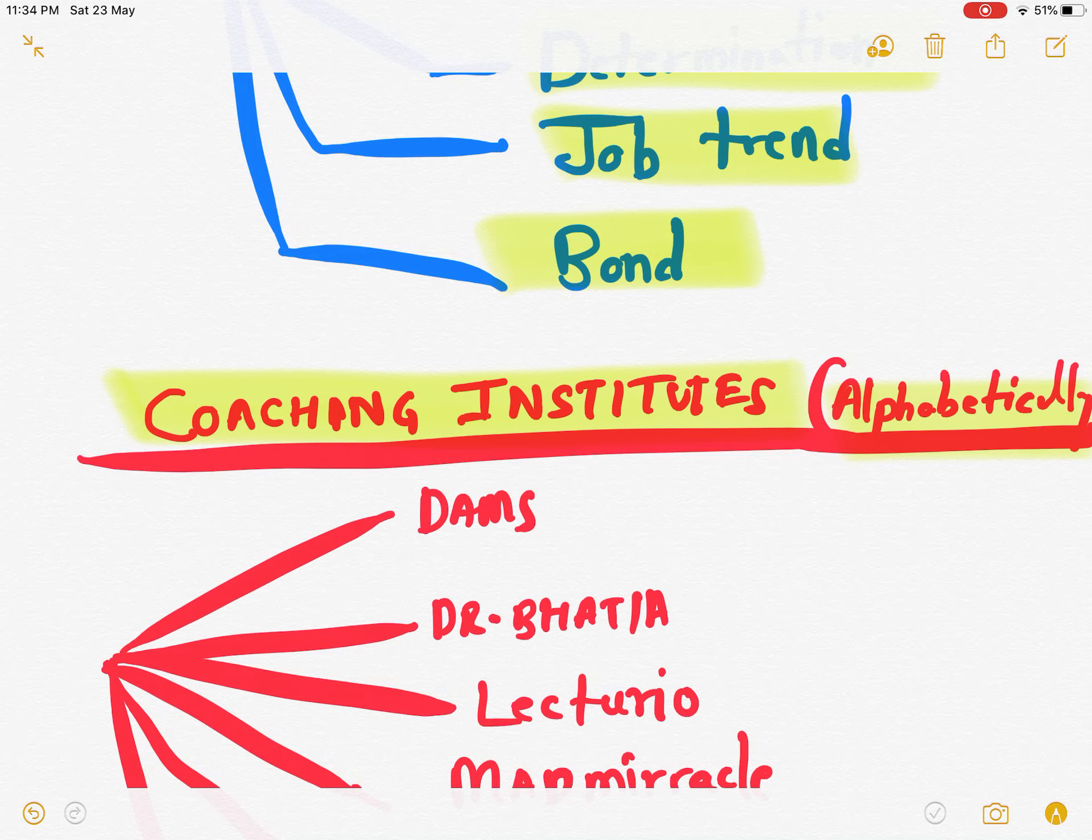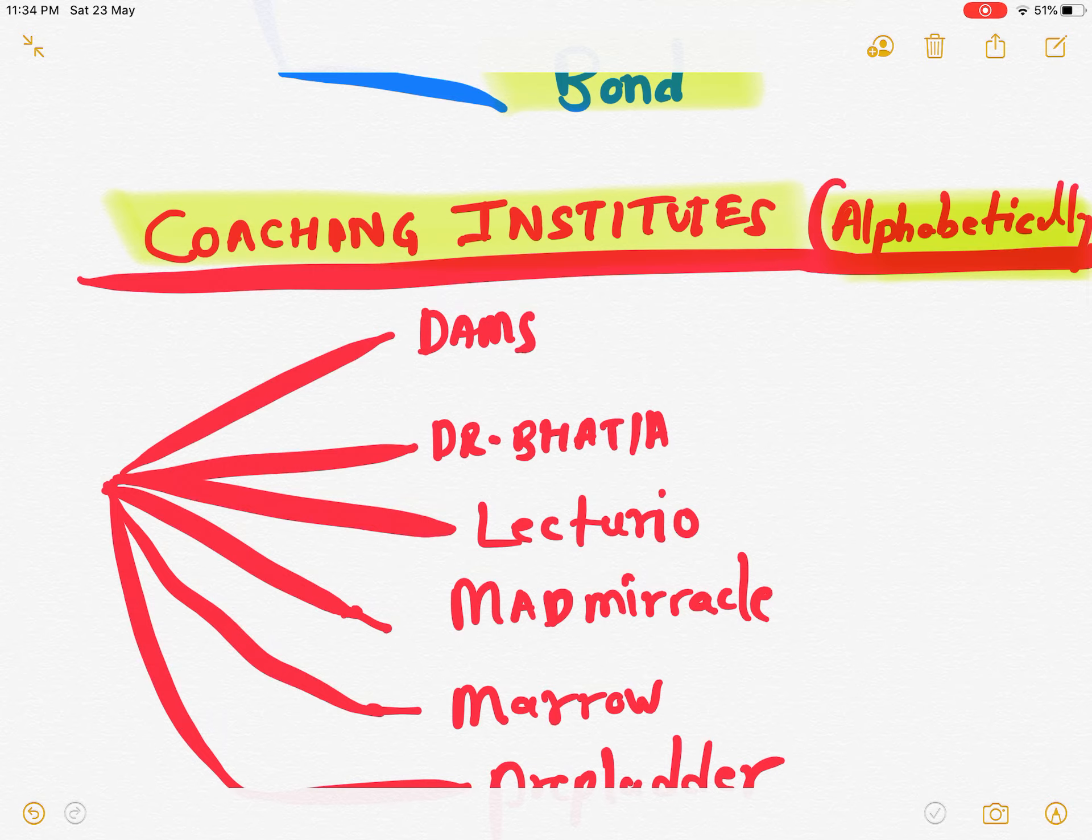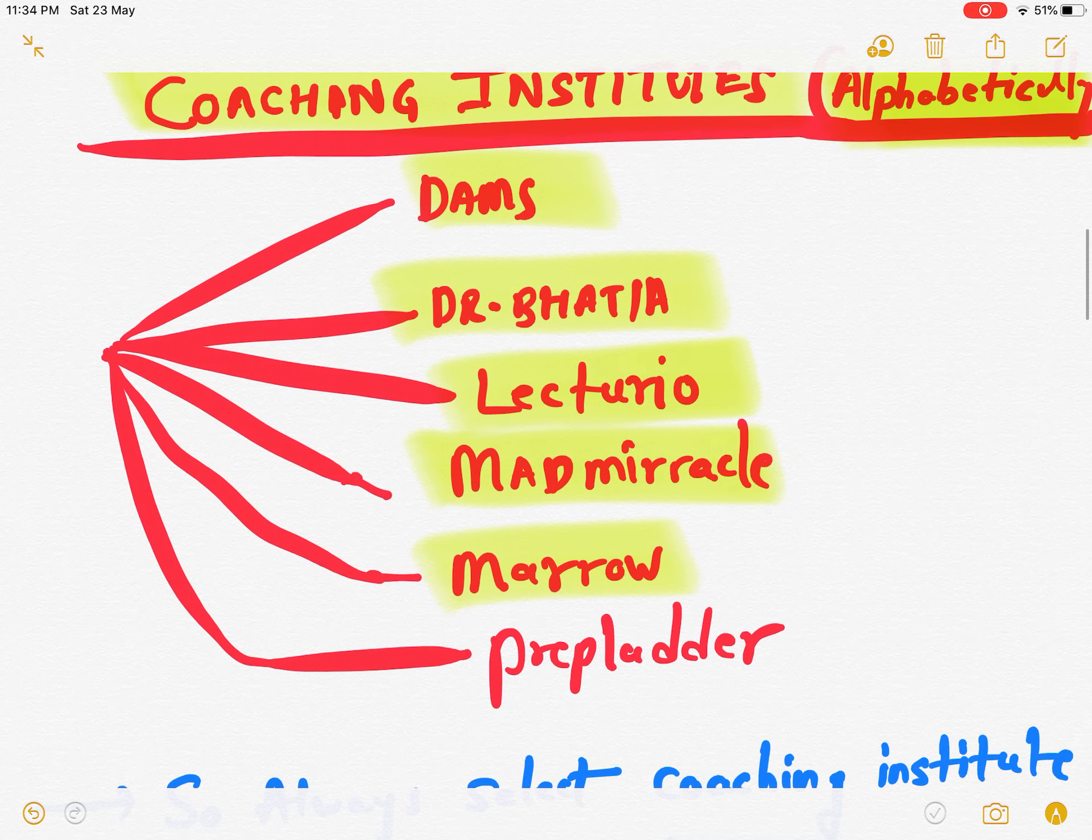I will discuss something about the coaching institutes which are trending these days. I just arrange them alphabetically, mind it, alphabetically: DAMS, Dr. Bhatia, LXRIO, MAD, MIRACLE, MARROW, PREPLADDER. These are some coaching institutes which are presently going to be the choice of the students for their preparation of NEET PG exam.